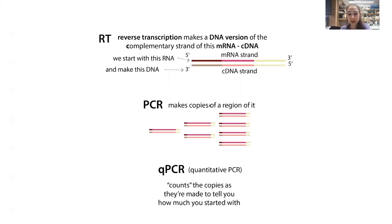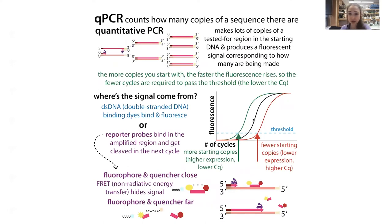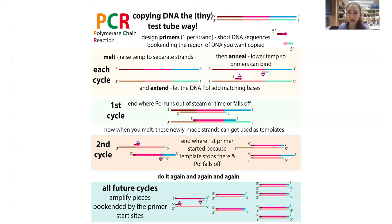Because you're growing exponentially, if you started with more copies you reach huge numbers more quickly. We set a threshold and ask how long it takes to reach it — the more copies you start with, the faster you cross the threshold. This crossing point is called the CQ (quantification cycle) or CT (threshold cycle). We use primers — short pieces of DNA — to specify the region to be copied, and we design primers specific for the messenger RNA we want to detect.